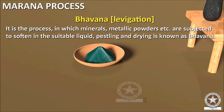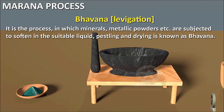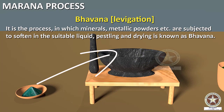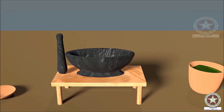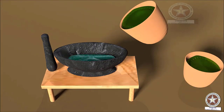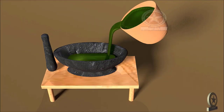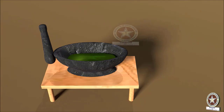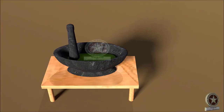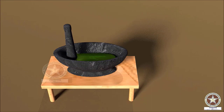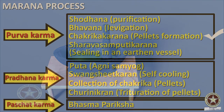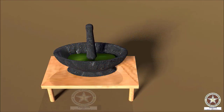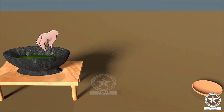After Shodhana comes Bhavana or Lavigation. It is the process in which metal or mineral powder is subjected to liquid media specific to those metals and minerals, followed by pestling and drying. The procedure of Bhavana has also been explained in detail in a previous video.